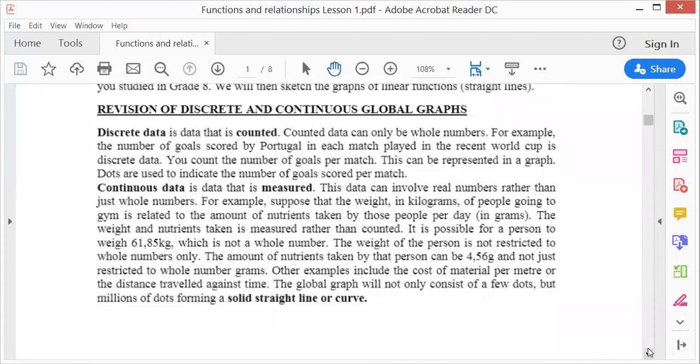Let's first talk about when will a graph be discrete and when will a graph be continuous. There is a difference. A graph is discrete when your data, your information, is discrete. It can be counted. Counted data can only be whole numbers. For example, the number of goals scored by Portugal in each match played in the recent World Cup is discrete. You count the number of goals per match. This can be represented in a graph using dots. In other words, no fractions, they mean whole numbers, no fractions and also no negative numbers. So if you have to draw a graph, it will have to be dots.